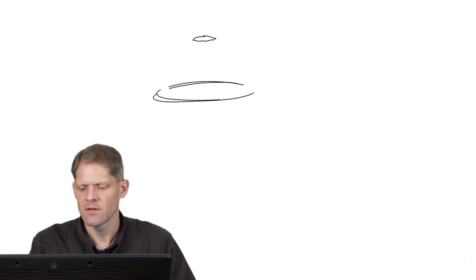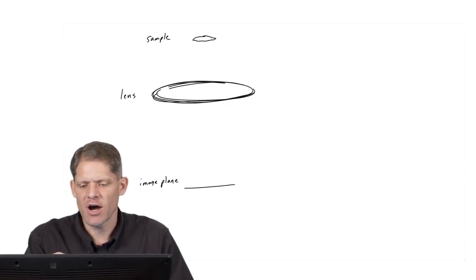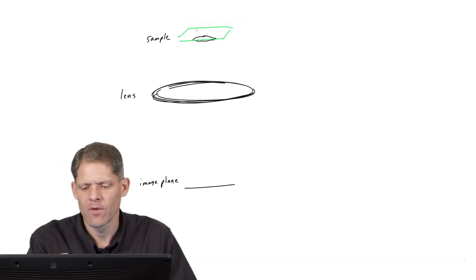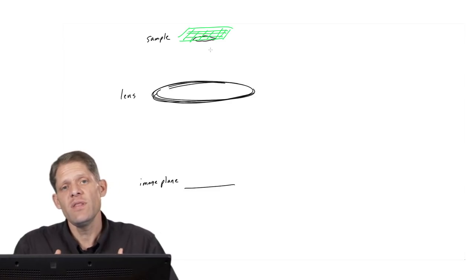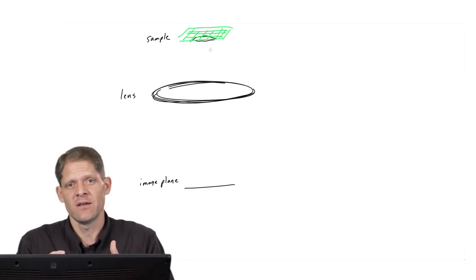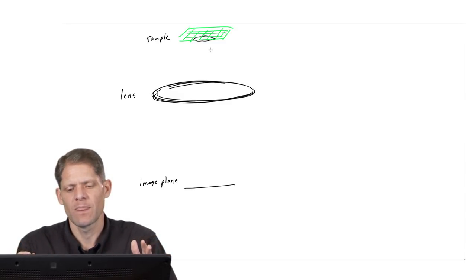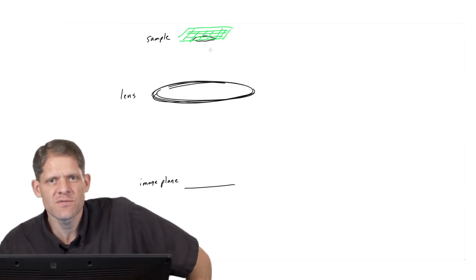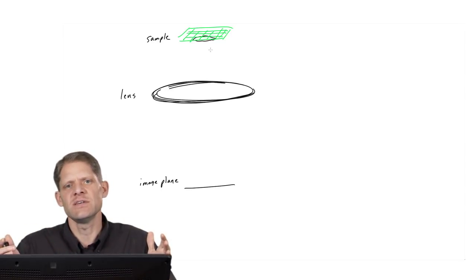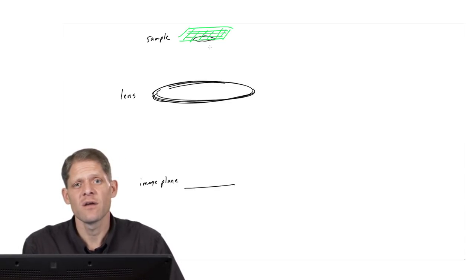Let's begin by drawing the sample and the lens that collects the scattered radiation, and below an image plane. Now let me draw the incident electron as a plane wave coming down interacting with the sample. When that electron wave hits the sample, some of it will be unscattered and some of it will be scattered. The single electron can experience all of these phenomena and its contribution to the final image depends on how all of these processes interfere with each other. So let's first think about the unscattered part of that electron wave.